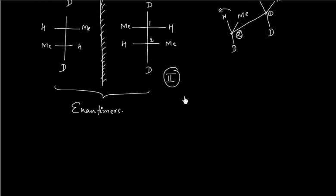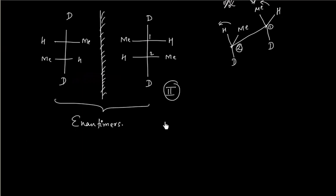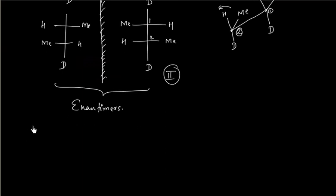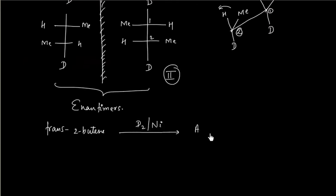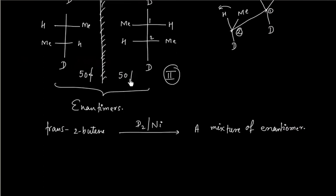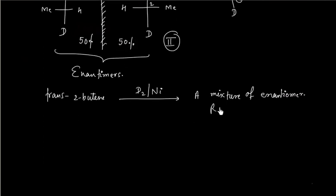So basically trans-2-butene on reaction with D2 in the presence of nickel will give a mixture of enantiomers. These two enantiomers will be equal in amount — one is 50% and the other is also 50%. So the final product will be a racemic mixture.